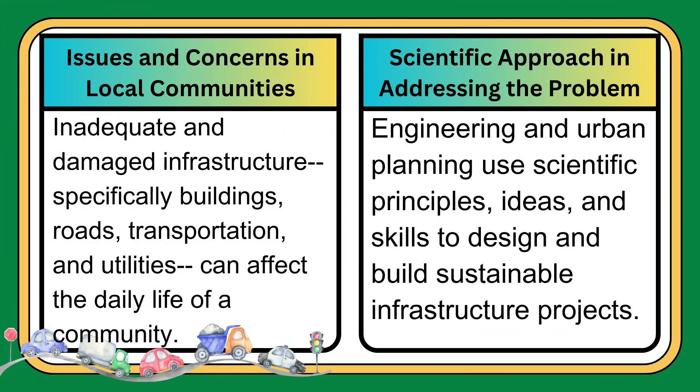Number five: inadequate and damaged infrastructure, specifically buildings, roads, transportation, and utilities can affect the daily life of a community. Scientific approach in addressing the problem: engineering and urban planning use scientific principles, ideas, and skills to design and build sustainable infrastructure projects.